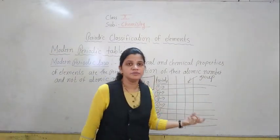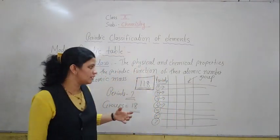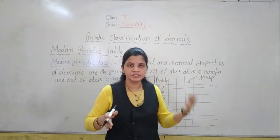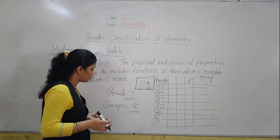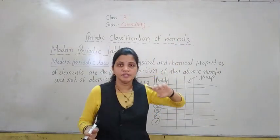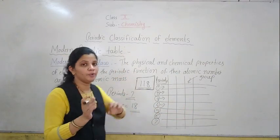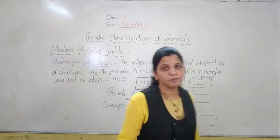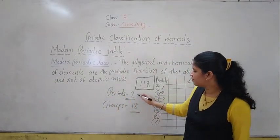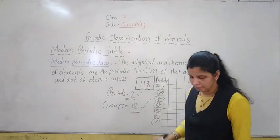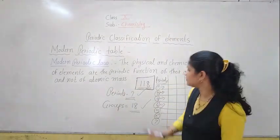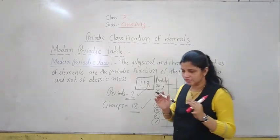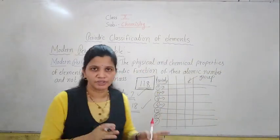See, in Mendeleev's Periodic Table, he divided the elements into 7 groups with A and B subgroups. So if the question comes about the Modern Periodic Table — how many periods and groups — in the Modern Periodic Table there are 7 periods and 18 groups. This is the basic information of the Modern Periodic Table.